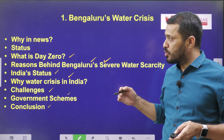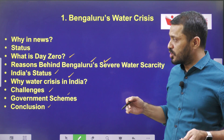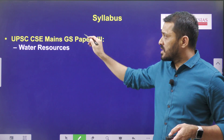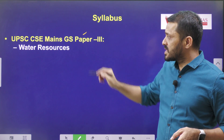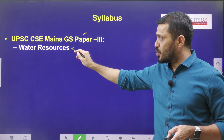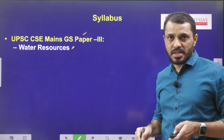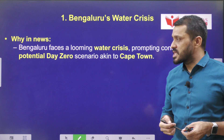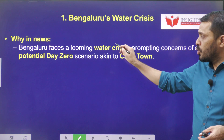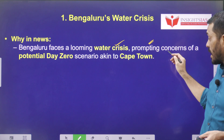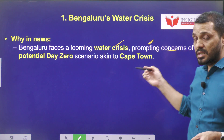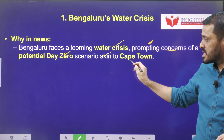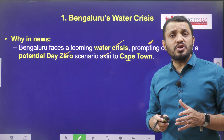These are the components we are going to discuss in this particular video. Regarding service mapping, this particular topic is related to GS Paper 3, that is water resources. Let us see the context. Bengaluru faces a looming water crisis, prompting concerns of a potential day zero scenario similar to Cape Town.